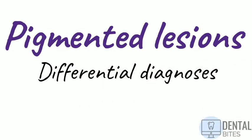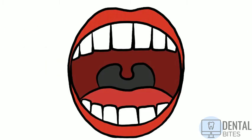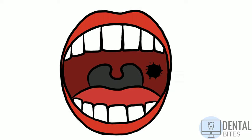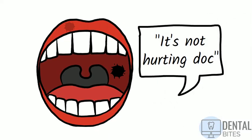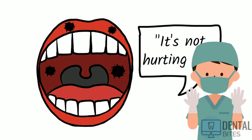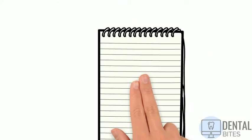Hi guys, welcome to the channel. In today's video we'll be covering differential diagnoses for pigmented lesions. These are essentially blue or black patches in the mouth. They are rarely painful and can appear as solitary or multiple lesions. Another important thing to note is that oral pigmentation might be due to neoplasia, which means that a biopsy should be carried out if there is any uncertainty on the diagnosis or suspicion of malignancy.